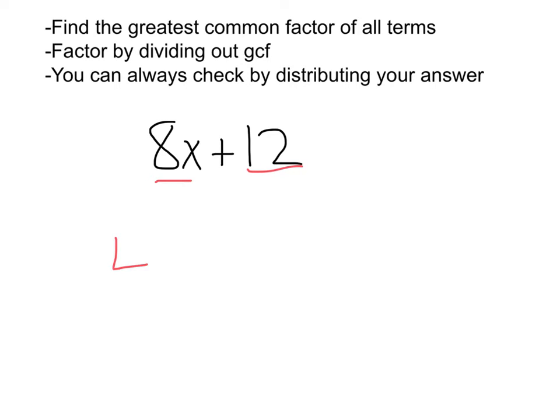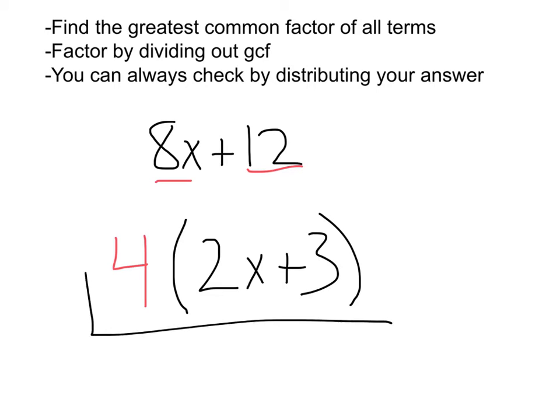Well the greatest common factor of those is 4. Now if I divide that out from here, I'm going to be left with a 2x plus, and 12 divided by 4 will be 3. And there's my answer.